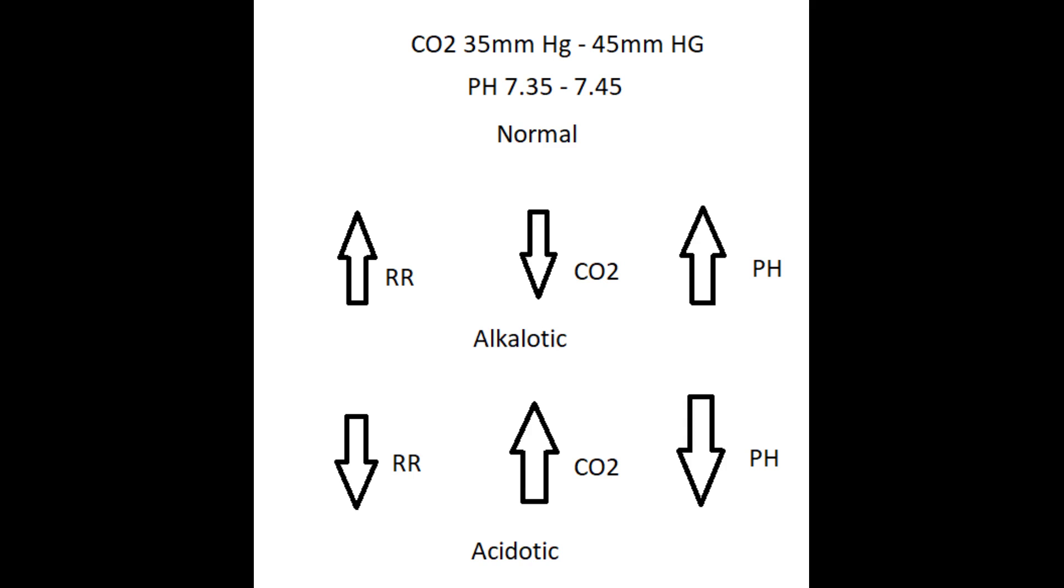The normal range that we're looking for is anywhere between 35 and 45, which is considered a normal exhaled CO2 reading. pH, the normal, because you got to remember neutral in pH is 7. I said anything that goes in an upward direction is considered alkalotic. Anything that goes downward is considered acidotic. A normal blood pH is 7.35 to 7.45.